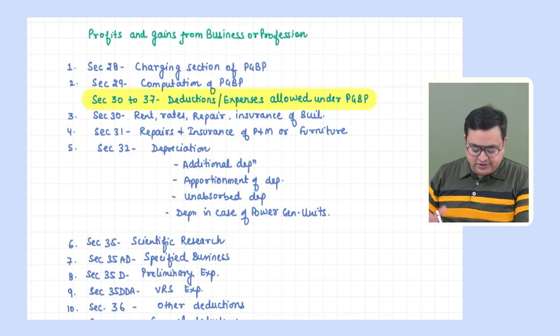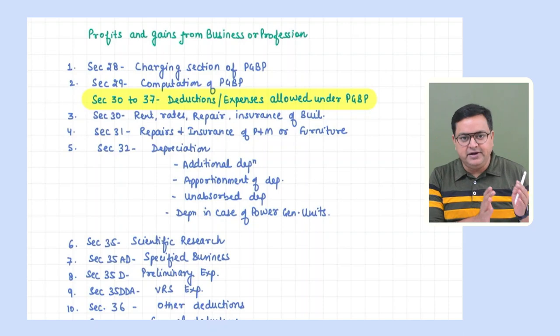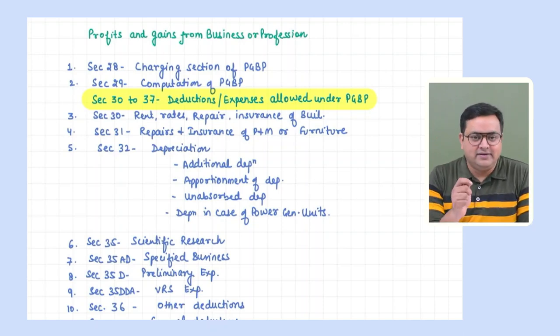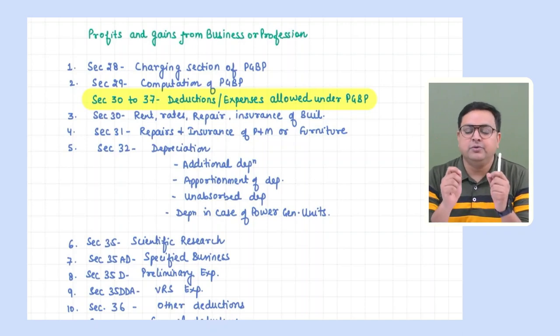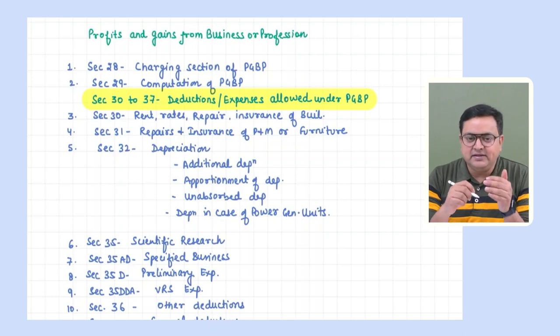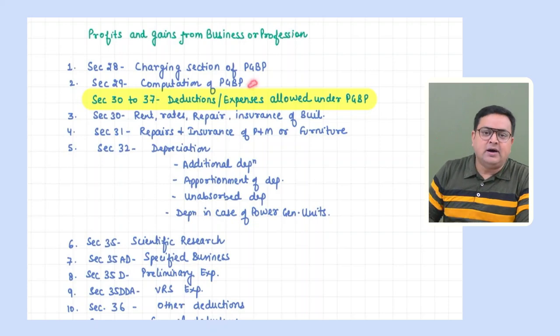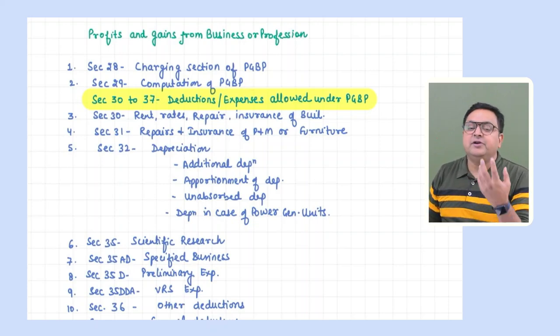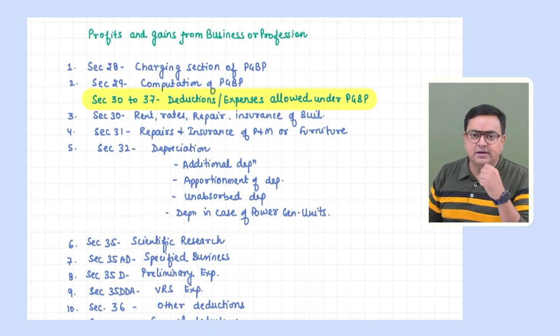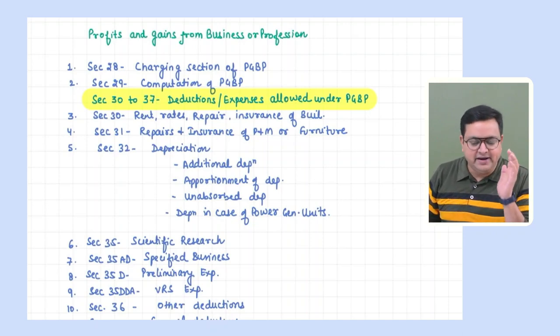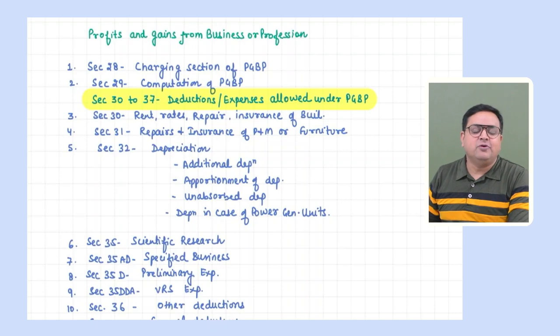First, we should know what contents are covered in PGBP. We have sections starting from section 28 to 44. I've jotted down all these sections and divided them into various parts. Section 28 is the charging section of PGBP - it tells us what income will be taxed under this head. Section 29 tells us how we will compute our PGBP income - what is the mode of computation.